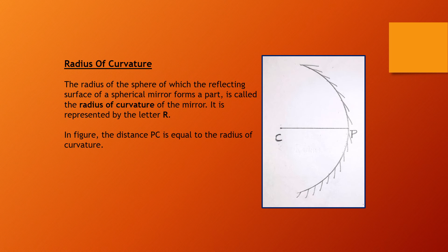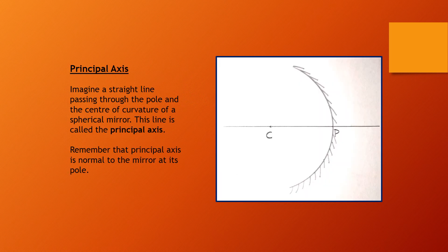Principal axis: imagine a straight line passing through the pole and the center of curvature of a spherical mirror. This line is called the principal axis. Remember, the principal axis is normal to the mirror at its pole.